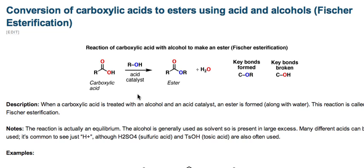Let's look at our general template for a Fischer Esterification reaction. We're going to start with a carboxylic acid and add an alcohol, ROH — notice the blue oxygen here. We're adding an acid catalyst and our product is an ester, so we've changed OH to OR. We also liberate one molecule of water in this reaction.